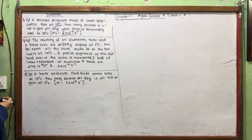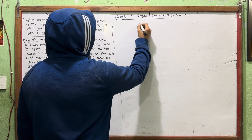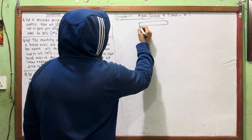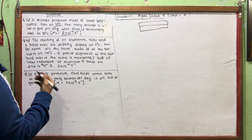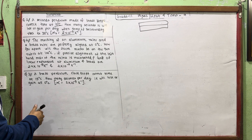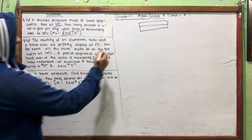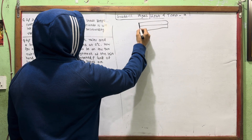The markings of an aluminum ruler and a brass ruler are perfectly aligned at 0 degrees Celsius. How far apart will the 20 cm mark be on the two rulers at 100 degrees Celsius? Its precise alignment at the left end of the ruler is maintained. Let's calculate the linear expansion.